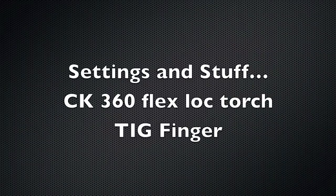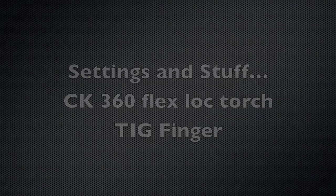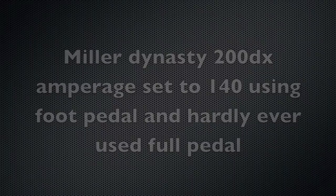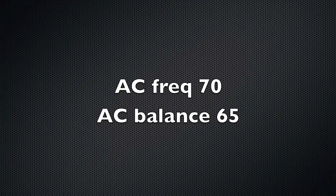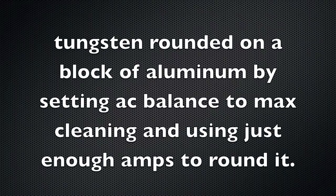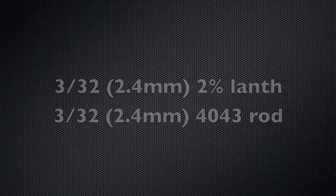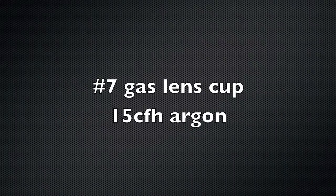For settings and stuff, I use a CK 360 Flex Lock torch and a TIG finger. I use a Miller Dynasty 200DX, amperage set to about 140, but using the foot pedal and hardly ever got to full pedal, just when starting out beads. AC frequency on 70, AC balance 65. Tungsten rounded on a block of aluminum by setting the AC balance to the max cleaning and just using enough amps to round the tip. 3/32 inch 2% lanthanated electrode, 3/32 inch 4043 filler rod, number 7 gas lens cup, and 15 CFH of flow on the argon.